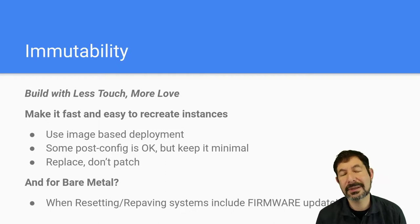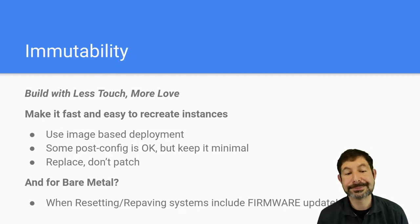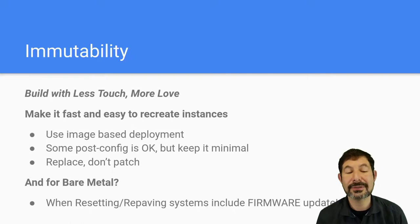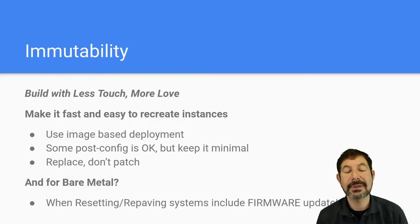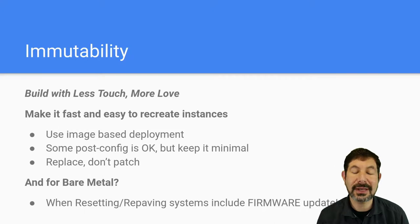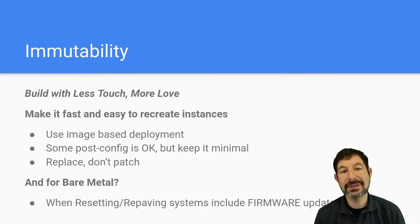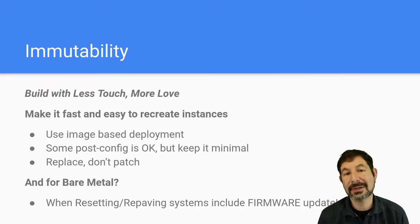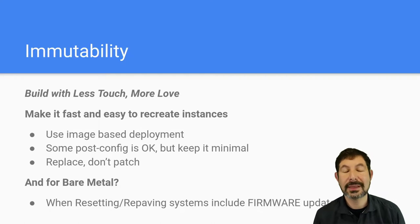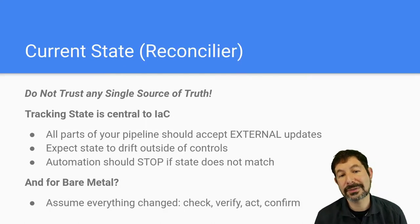We've been doing this for a long time in the Digital Rebar space, and it is a better, faster way to go — it takes a little bit more work up front. Post-config is okay, but keep it minimal: replace, don't patch. And for bare metal, treat bare metal as much as you can like cloud. That means reset and repave, not patch — that includes running firmware updates and changes as part of your sessions. Moving to that immutability thinking is an important part of being successful in infrastructure as code.